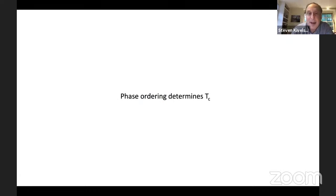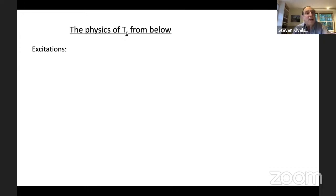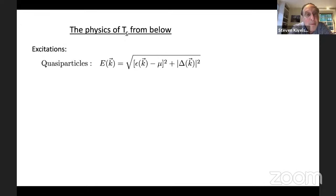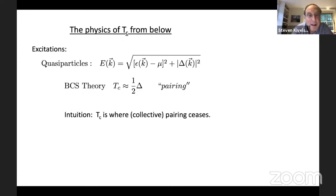Now the second topic: phase ordering determines TC. Rather than thinking of TC as an instability of a Fermi liquid, consider starting with information about the superconducting ground state and asking: based on that, what would we predict TC to be? When will thermal fluctuations destroy superconducting phase coherence? One energy scale that characterizes the binding of electrons into Cooper pairs would make TC the point at which the pairs fall apart. There is also a phase degree of freedom described at low temperature by a nonlinear sigma model, with stiffness kappa expressed as superfluid density rho-s divided by effective mass m*.